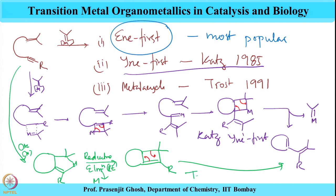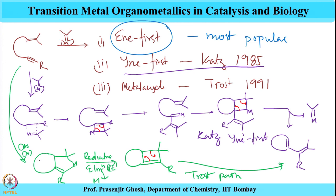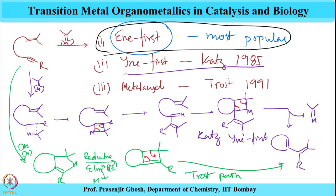This is the Trost pathway, apart from the alkene-first mechanism discussed earlier. Even though the alkene-first mechanism is by far the most popular one, there are possibilities of an alkyne-first pathway as shown, where the alkene reacts with the metal catalyst, and the other is the metallocycle as proposed by Trost. These two mechanisms have been proposed for this enyne metathesis reaction, however they have not met with much success.